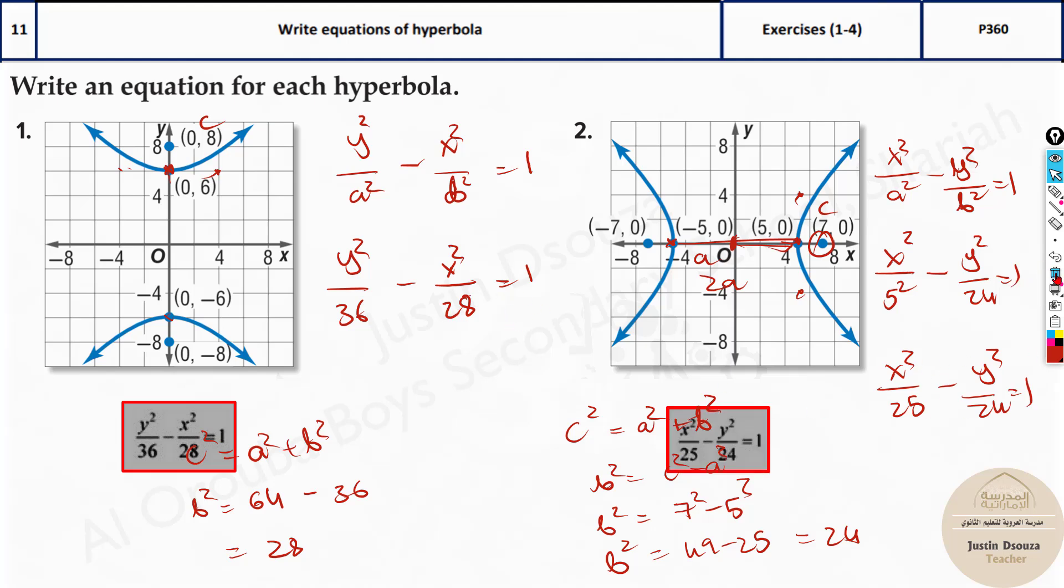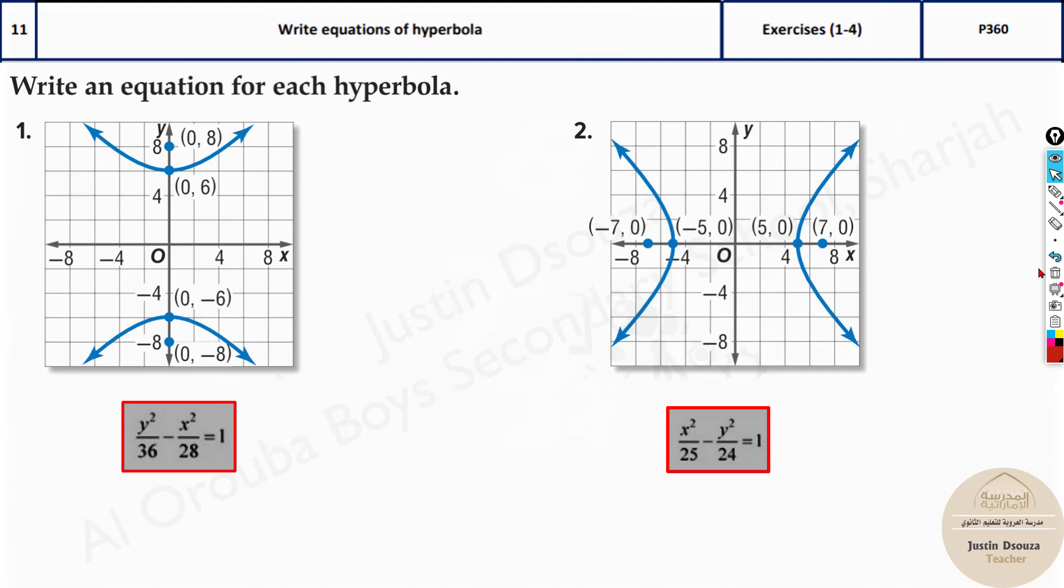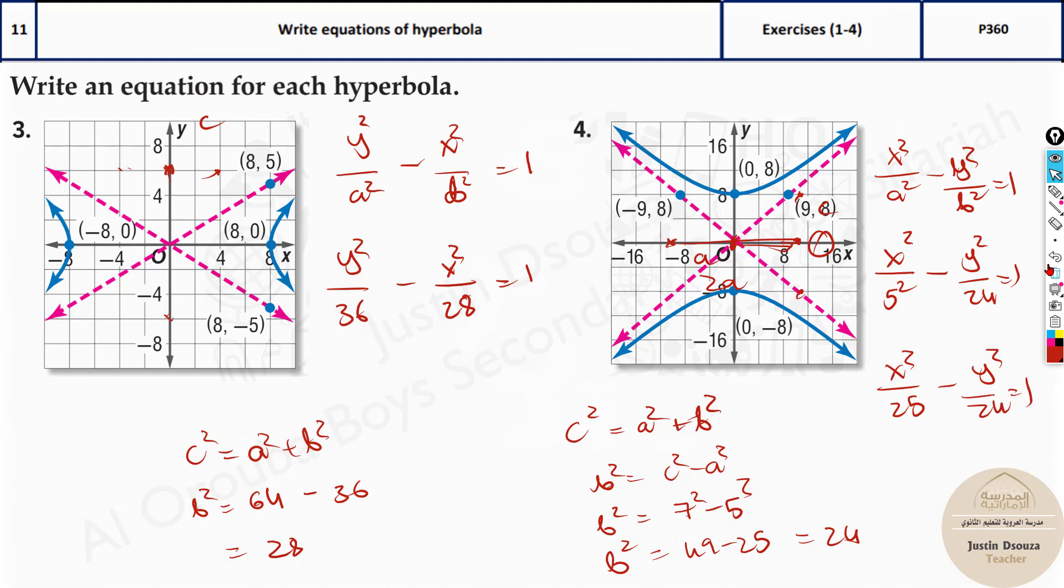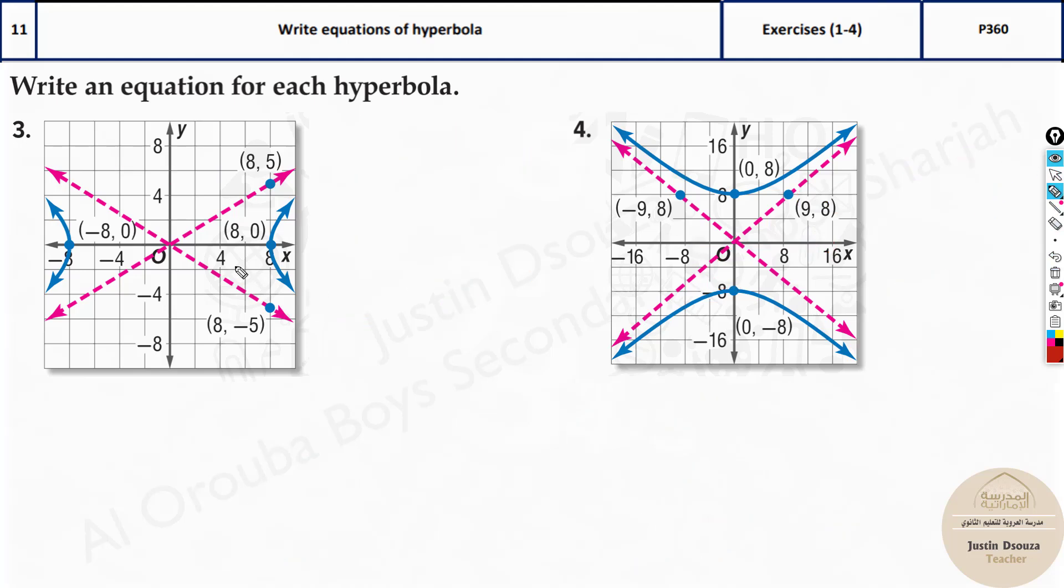And over here was the second one. These are the answers. Now look over here. The difference is the minus y squared over here, minus x squared. And the last two problems here, the same formulas.